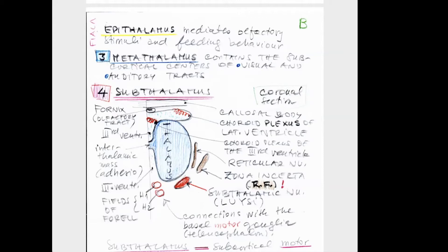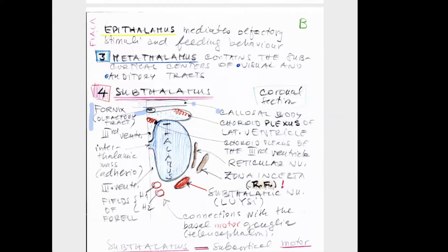We leave the thalamus as the biggest part for the next step. First, some words on the small part involving motor function — that is why we use red color for the subthalamus. Looking at a coronal section for better orientation, here is the corpus callosum, interconnecting the right and left hemispheres as the biggest commissure. Then we see a small band of white fibers called the fornix, seen on all coronal sections and belonging to the olfactory tract.